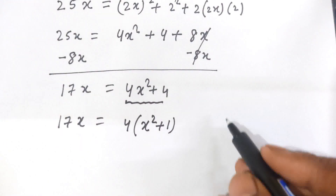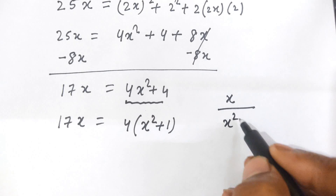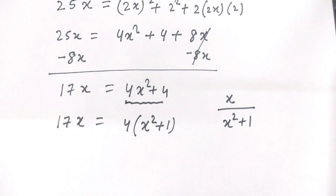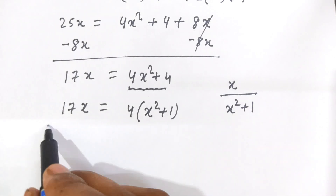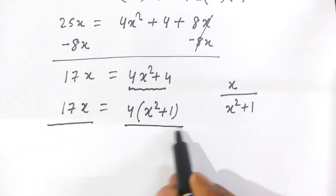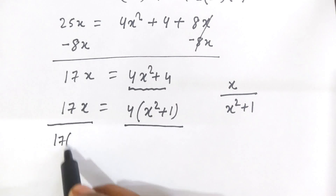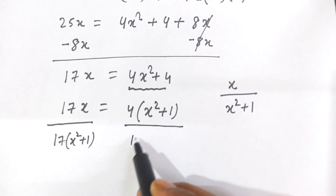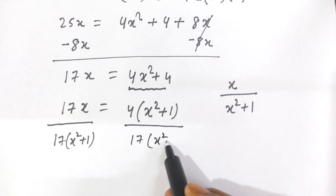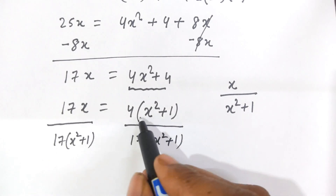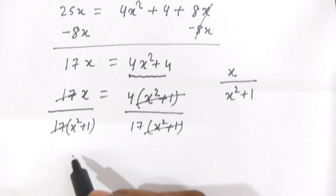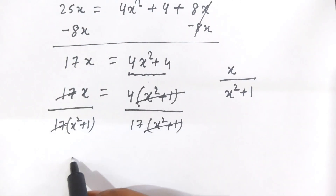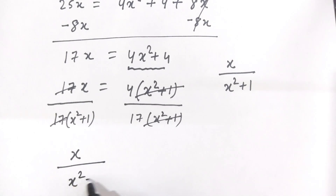Now students, we will find out the value of x divided by x square plus 1. Here 17x equals 4 times x square plus 1. Now divide both sides by 17 times x square plus 1; then x square plus 1 and x square plus 1 are cancelled out, and 17 and 17 are cancelled out. So on the left hand side we get x divided by x square plus 1, this is equal to 4 by 17.